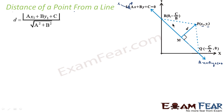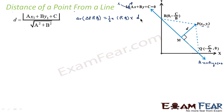If you see triangle PQR, the area of triangle PQR is nothing but one-half into base RQ into height, and in our case the height is d. So if we find RQ and the area of the triangle, we can find d by substituting all values into this equation.